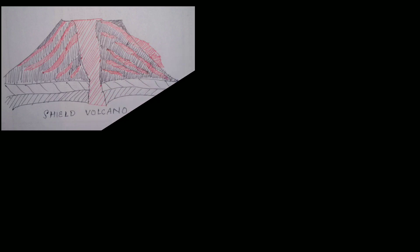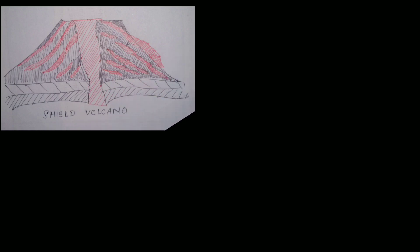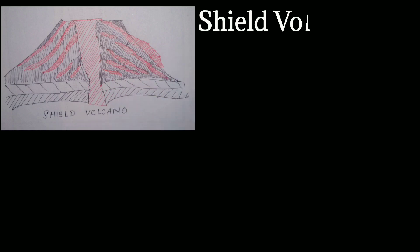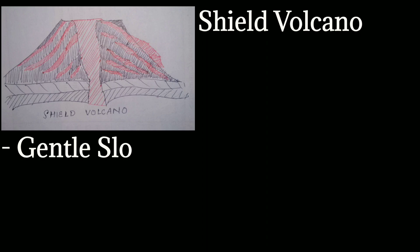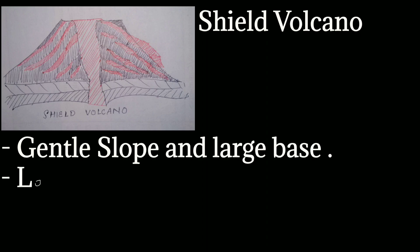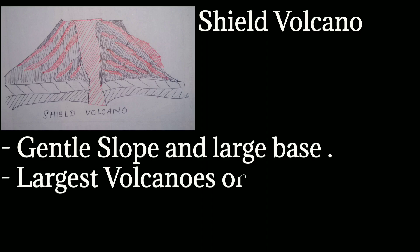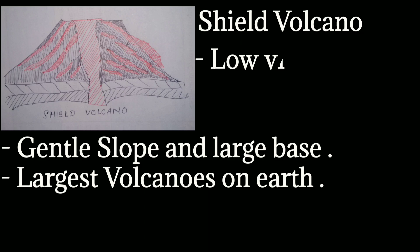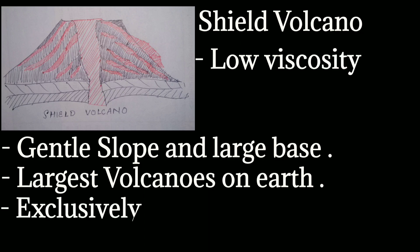The first one is the shield volcano. These are the largest volcanoes on the earth, with a gentle slope and a large base. The lava which comes out from these volcanoes is basalt, and they have low viscosity. They are not very steep.